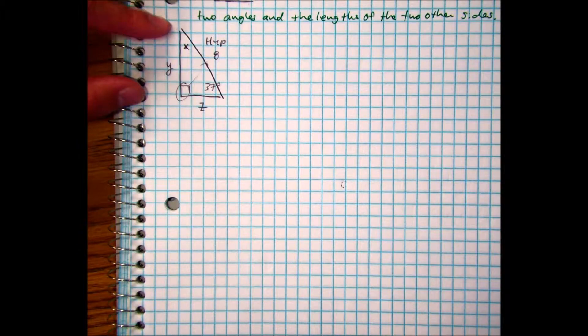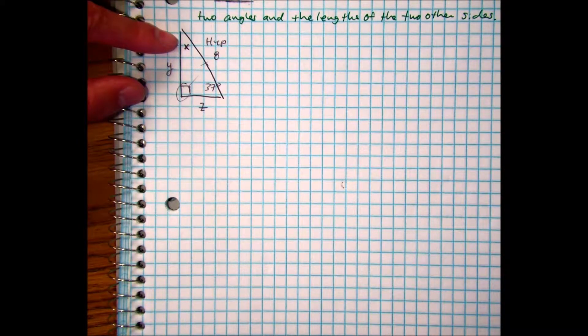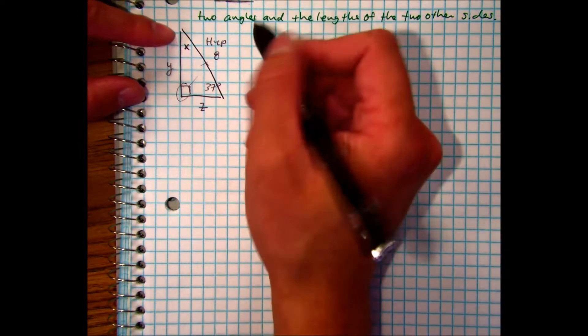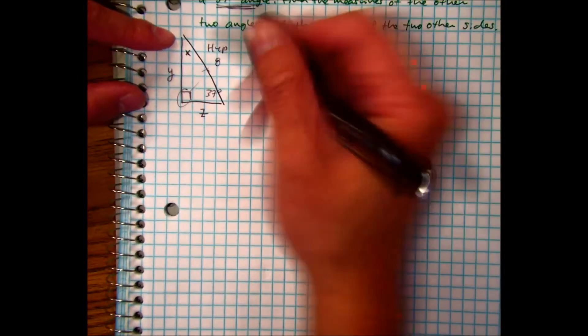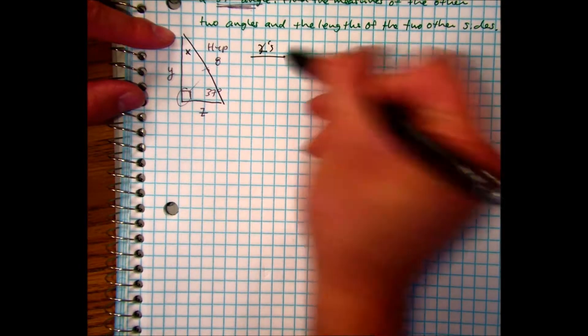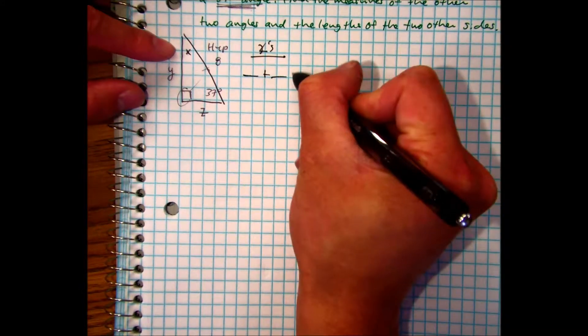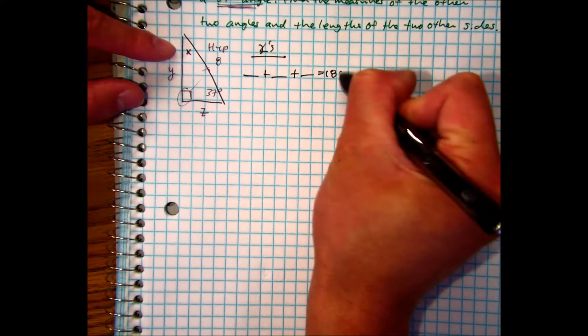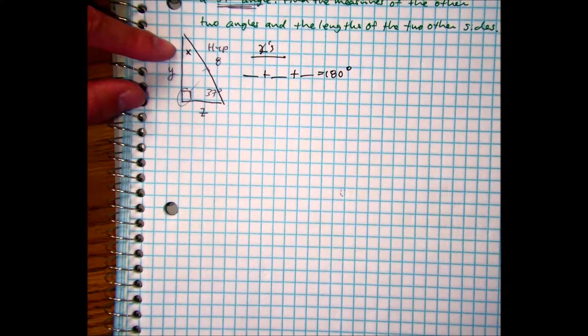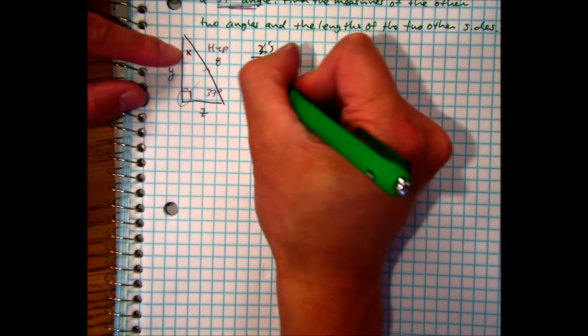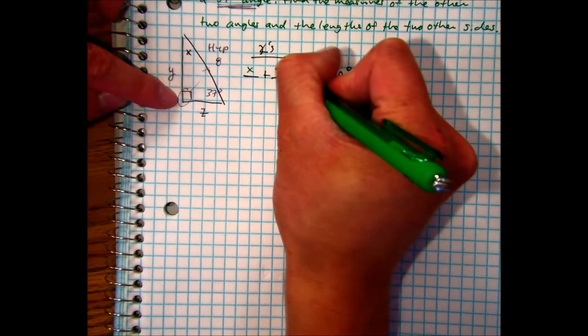To solve for x, I can just use the triangle sum theorem. So when I'm solving for angles, I can use blank plus blank plus blank equals 180 degrees, and just fill in the information you have. You have x, you have 90, you have 37.